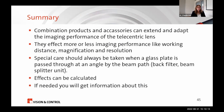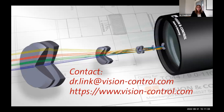In summary: combination products and accessories can extend and adapt the imaging performance of telecentric lenses. They affect imaging performance in terms of working distance, magnification, and resolution. Special care should always be taken when a glass plate is used where beams pass at a certain angle, because this introduces astigmatism and can affect image quality. These effects can be calculated using the formulas shown in this presentation. For more information, please contact our company. Thank you — here are my contact details; you can email us or visit our website.